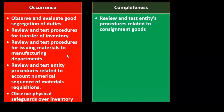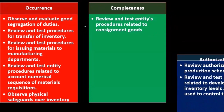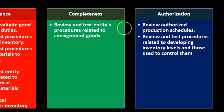With regards to completeness, we want to consider the proper allocation of inventory to the records. Then we have authorization — we're going to review authorized production schedules, review the authorization process, and review and test procedures related to developing inventory levels and those used to control them.